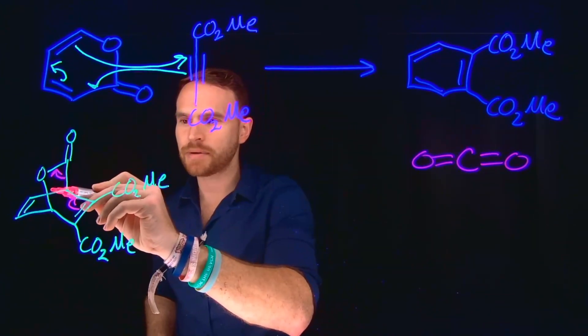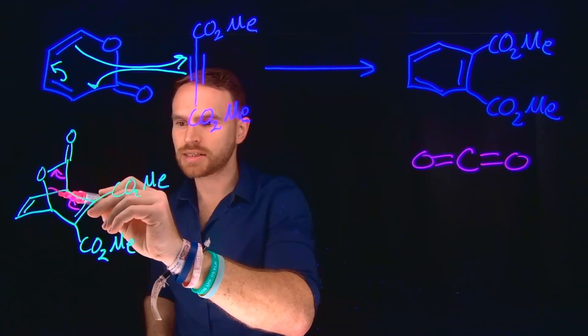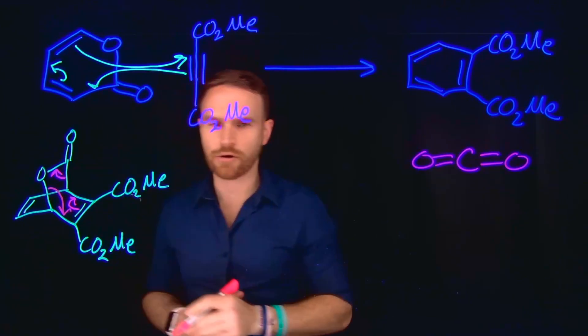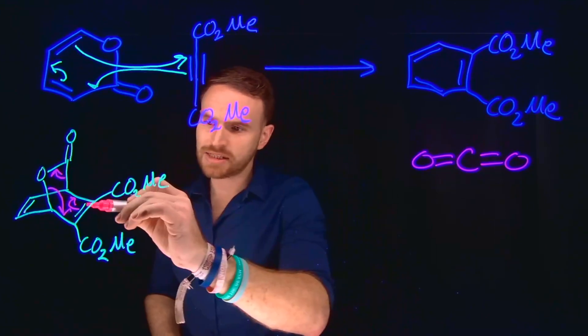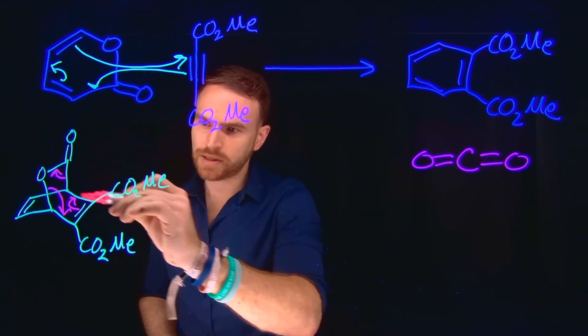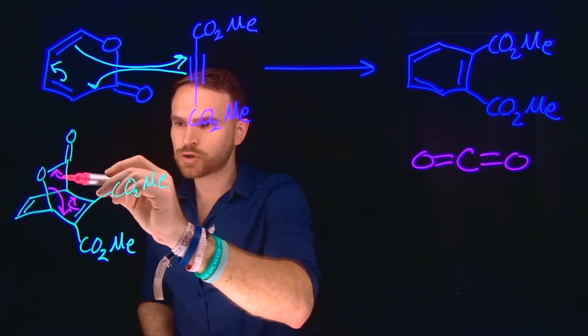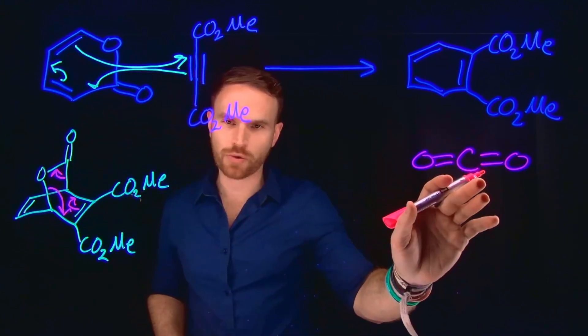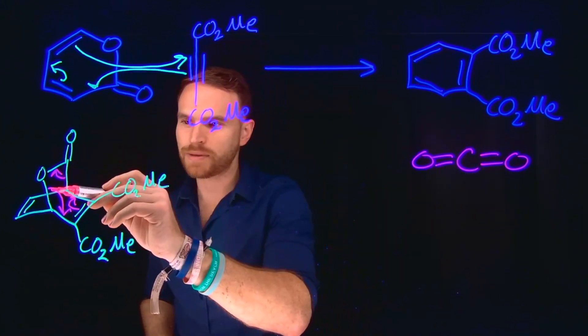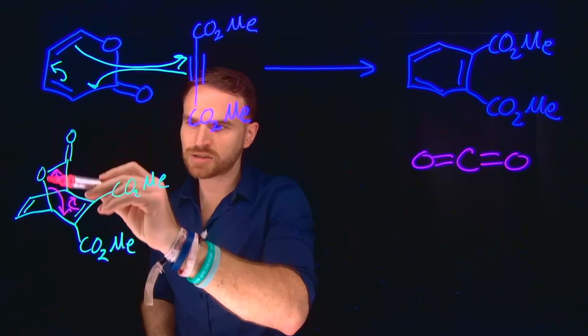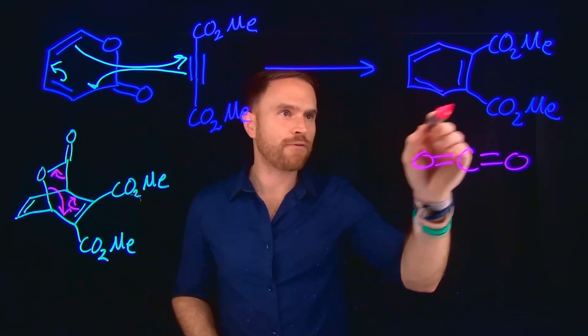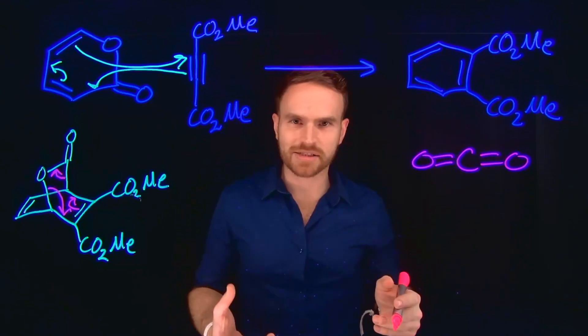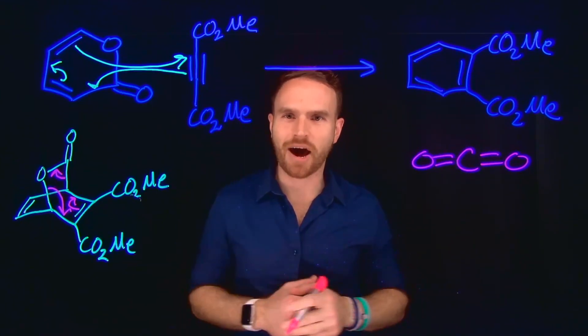So then notice what needs to happen is that these electrons just need to come down over here to complete this aromatic benzene ring system. These pi electrons move to being between these two carbons. These electrons came over here to help us generate CO2 as a leaving group gas. And then these electrons between the carbon and oxygen came down to give us our 4n plus 2 pi system, which is known as an aromatic compound.